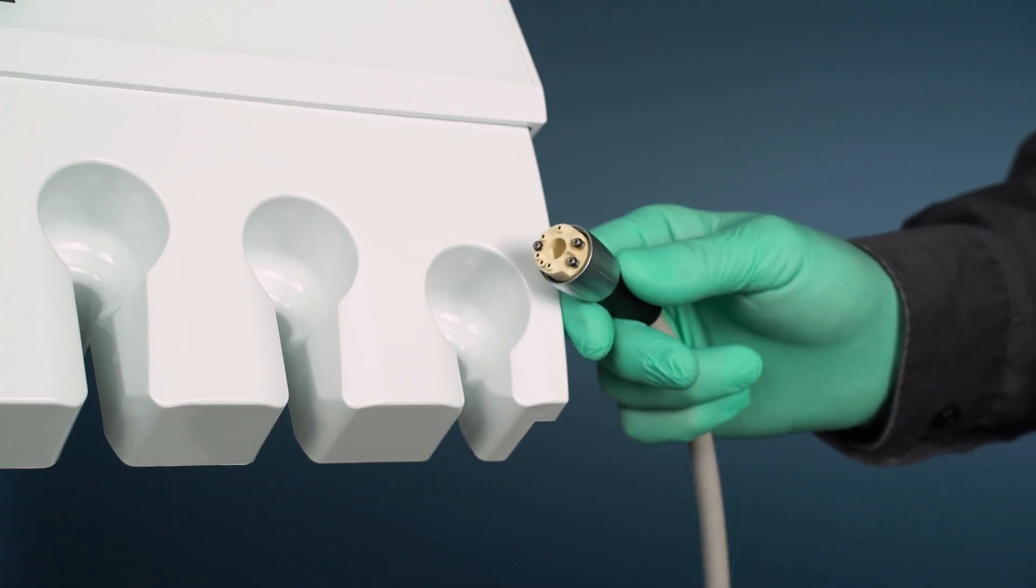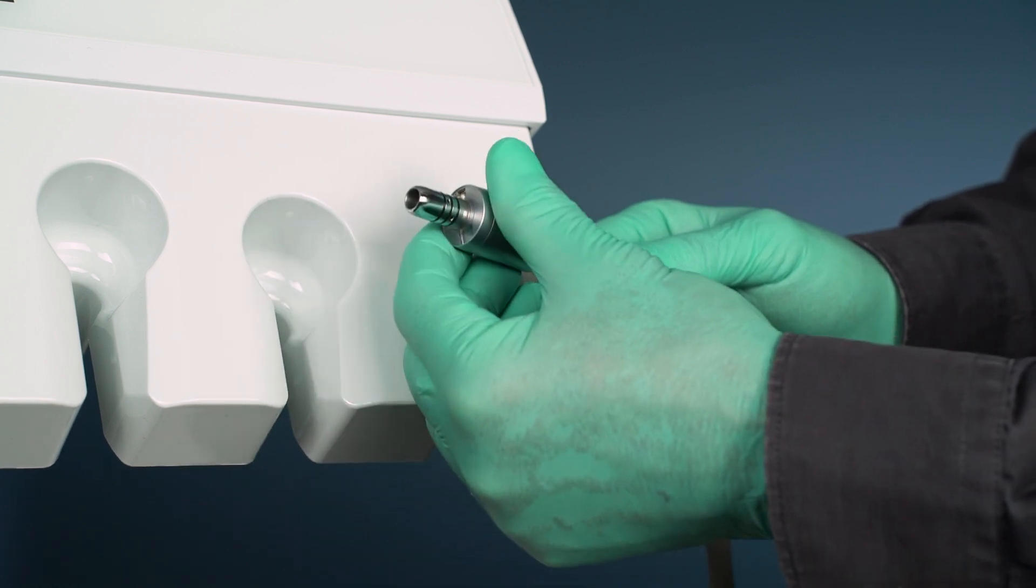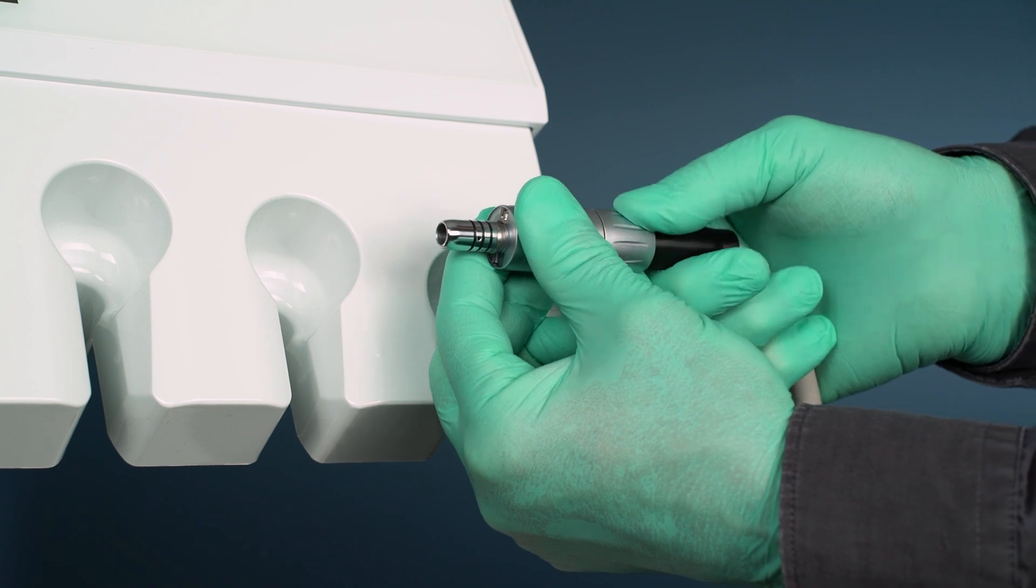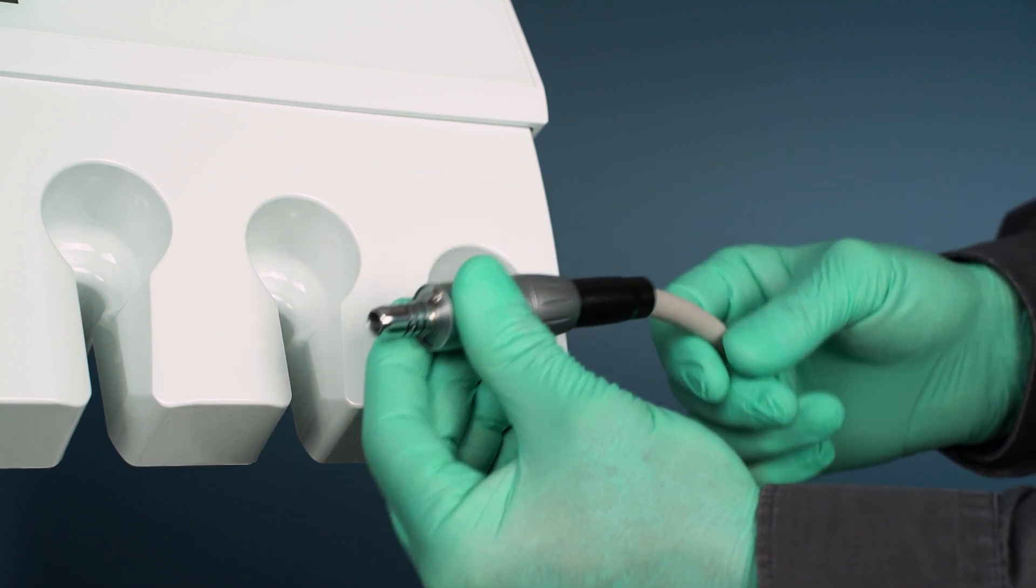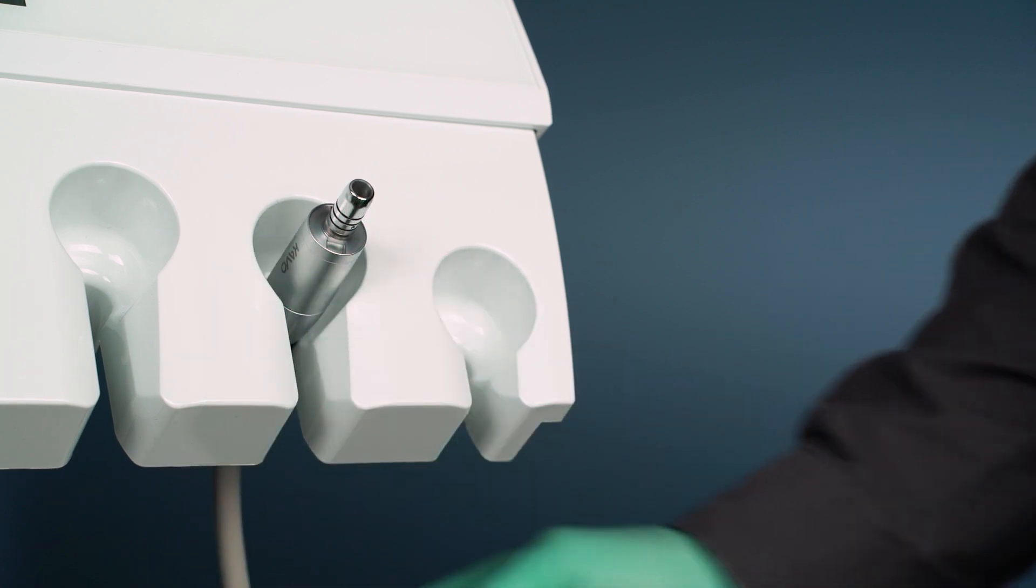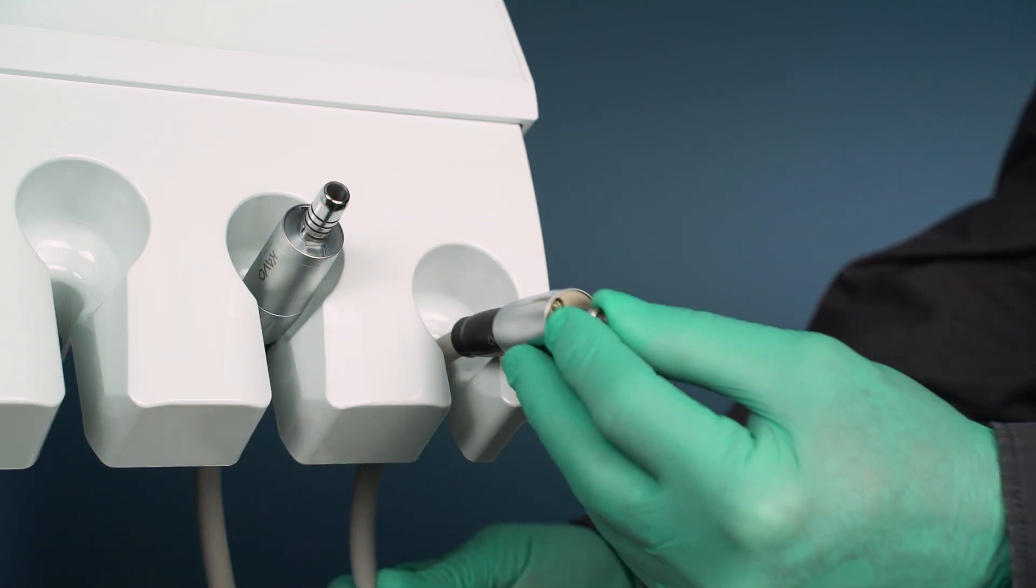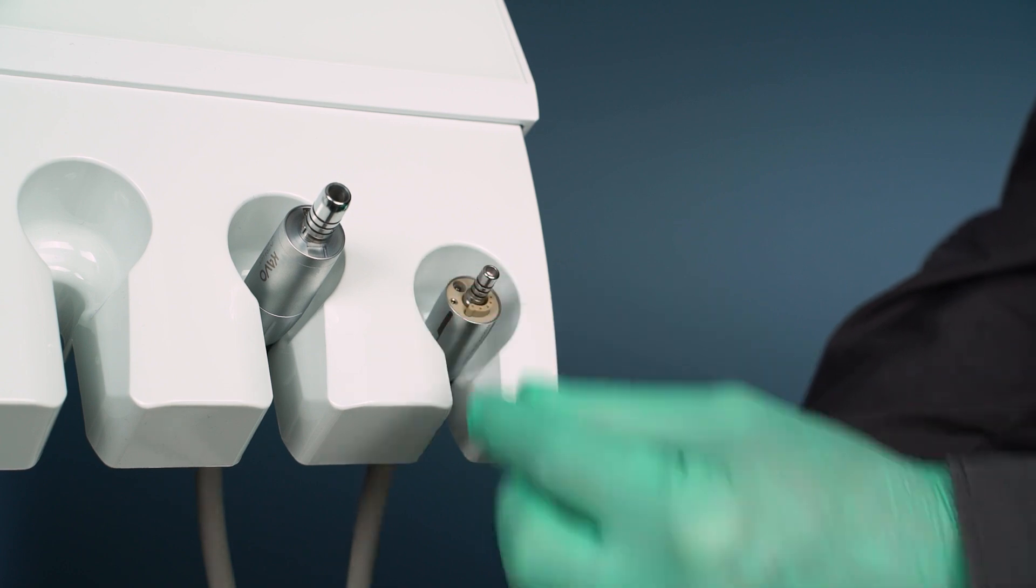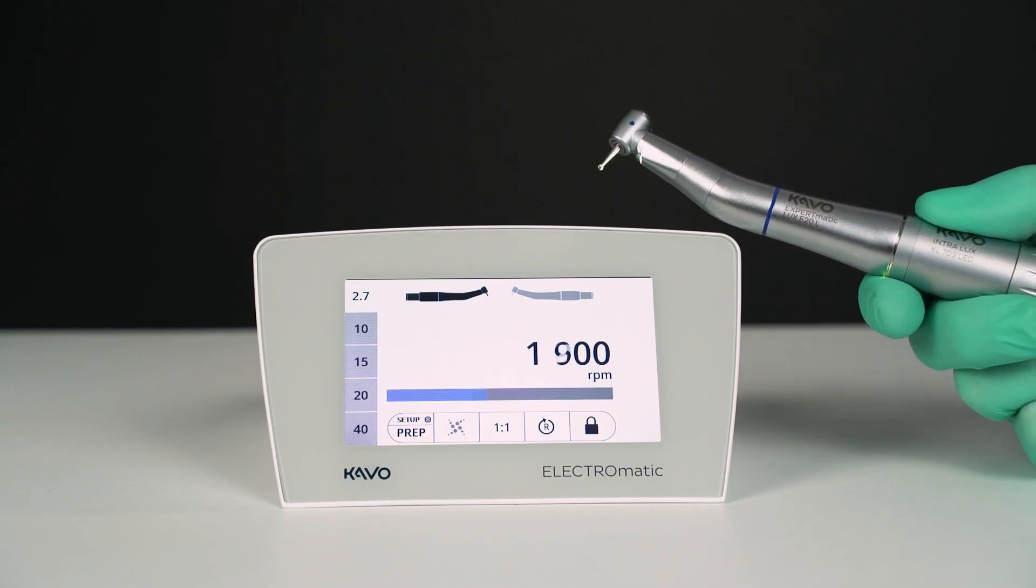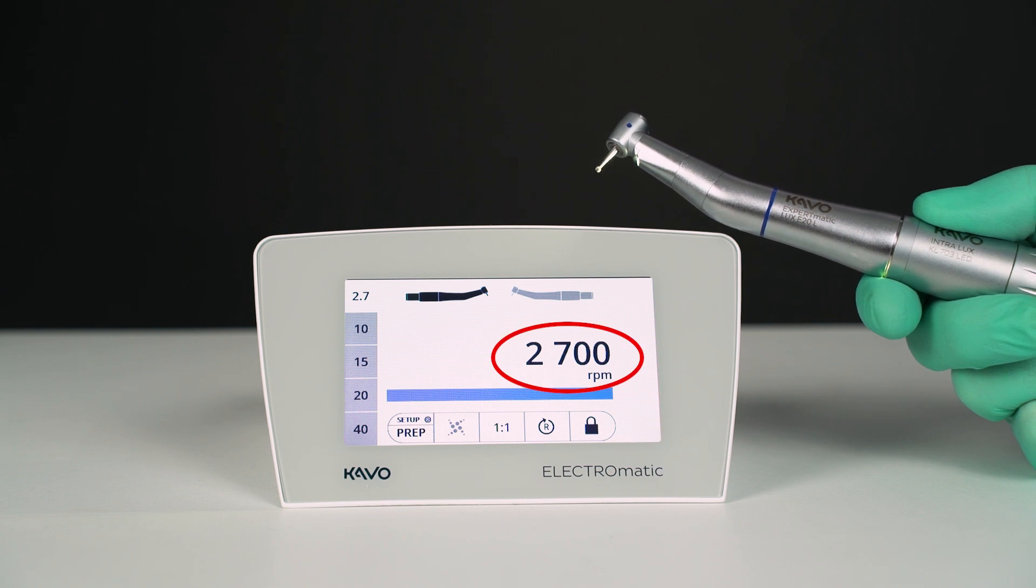The Electromatic is available with the motor hose from the KL703 motor with 40,000 rpm, which is the connection for all intra-hand pieces and contra angles. Or it is available with the comfort base hose, the connection for the short and ergonomic speed increasing comfort drive hand piece. The motor setting is adjusted to 2700 rpm max.